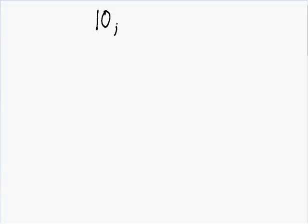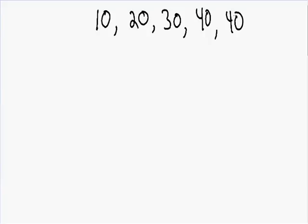Let's say we have the numbers 10, 20, 30, 40, and another 40. And we need to find the three central tendencies of this data set — so the mean, median, and mode.